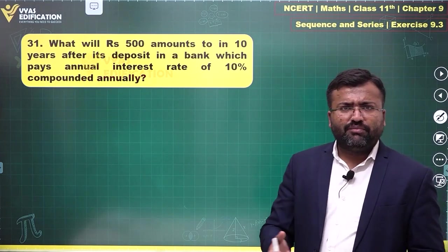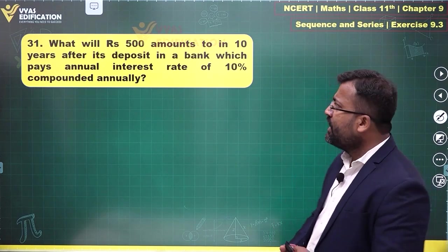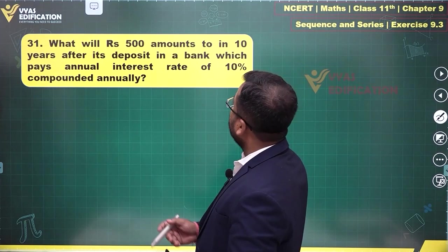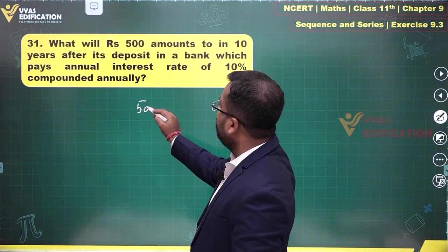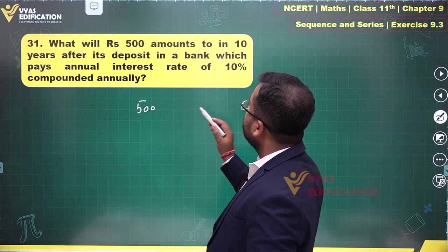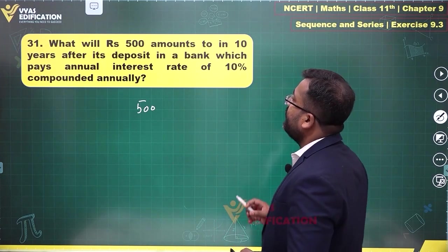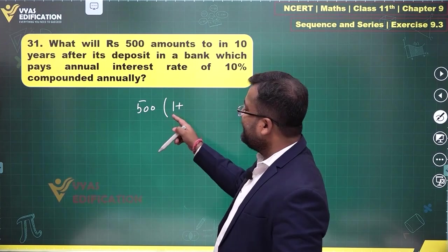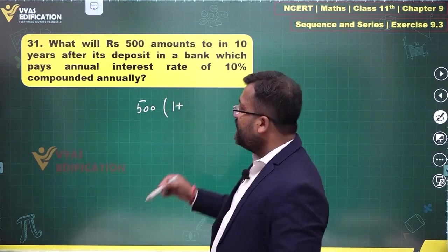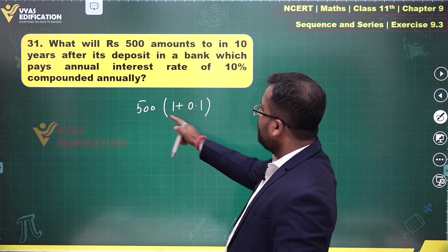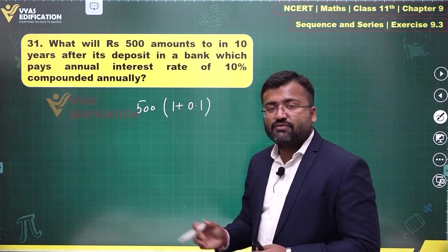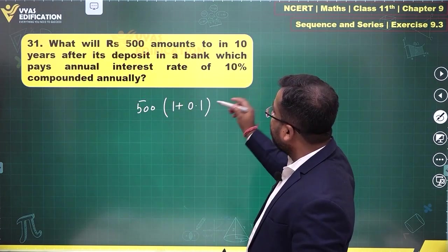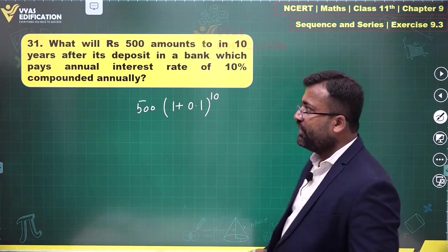This is a simple compound interest question and we can easily find that. So amount will be equal to what? Rs. 500 in 10 years at 10% compounded annually. So this amount becomes 1 plus you add 10% to this, that means 10% is 0.1. So 1 plus 0.1 equals 1.1, and that gives you the amount after 1 year. Simply, the amount after 10 years will be this multiplied 10 times.